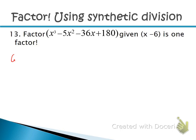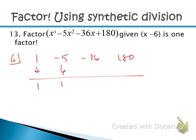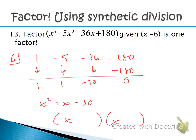Try another factoring example: x − 6 is a factor, so put 6 in the box. Coefficients are 1, −5, −36, 180. Bring down 1. Multiply: 6 times 1 is 6; add to get 1. Multiply: 6 times 1 is 6; add to get −30. Multiply: 6 times −30 is −180; add to get 0. Result is x² + x − 30. Factor that: we need factors of −30 that add to +1, which is +6 and −5. So the three factors are (x + 6)(x − 5)(x − 6).